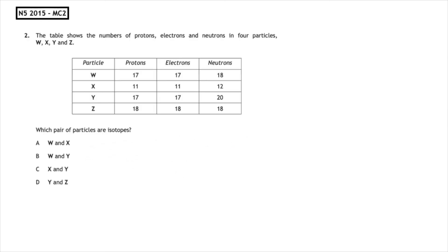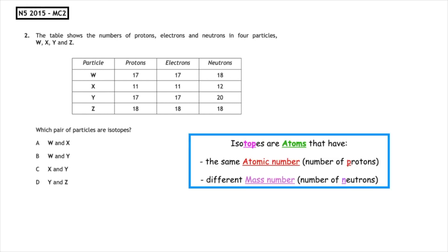This last past paper question is from the National 5, 2015, multiple choice 2. The table shows the number of protons, electrons, and neutrons in four particles: W, X, Y, and Z. Which pair of particles are isotopes? Remember, isotopes are atoms that have the same atomic number — the same number of protons — and a different mass number and a different number of neutrons. Looking at the protons column, the only pair with the same number of protons is W and Y. We can double-check that they have a different number of neutrons, which they do. So the correct answer is multiple choice answer B.